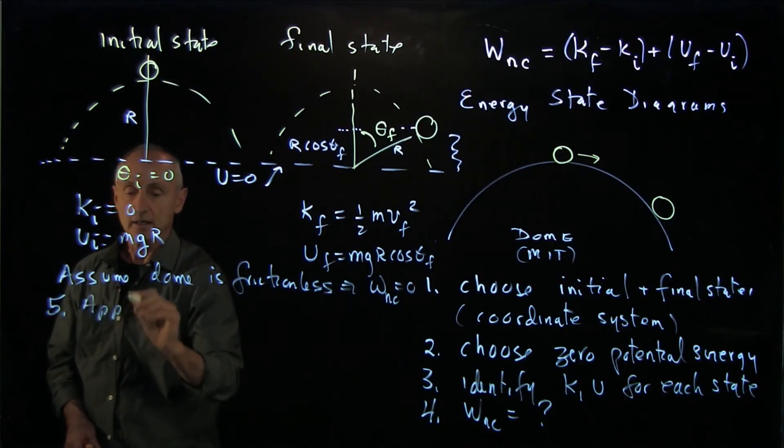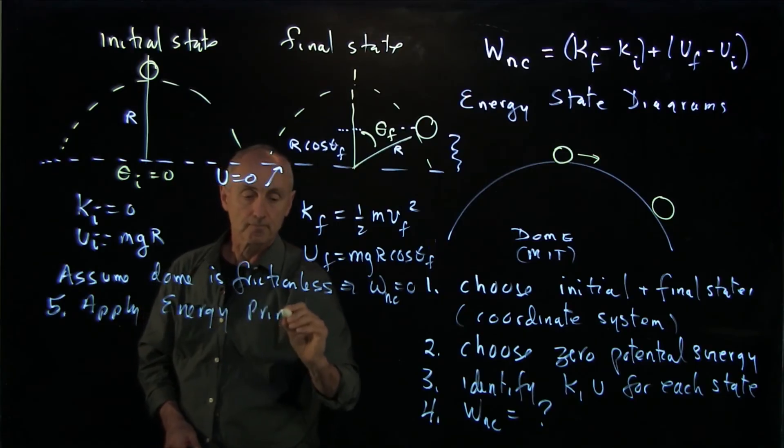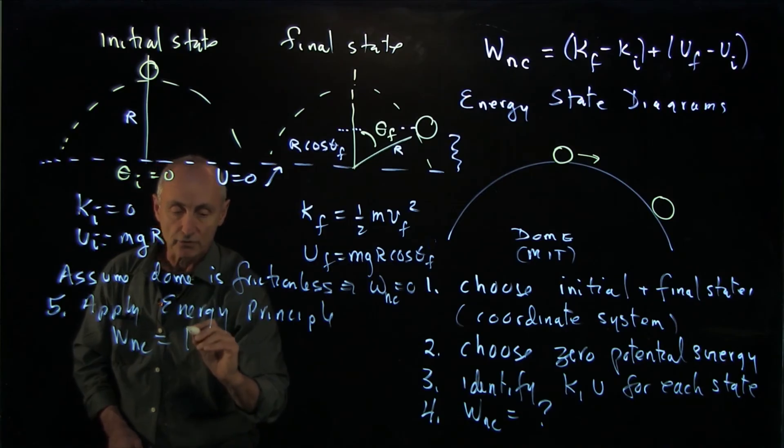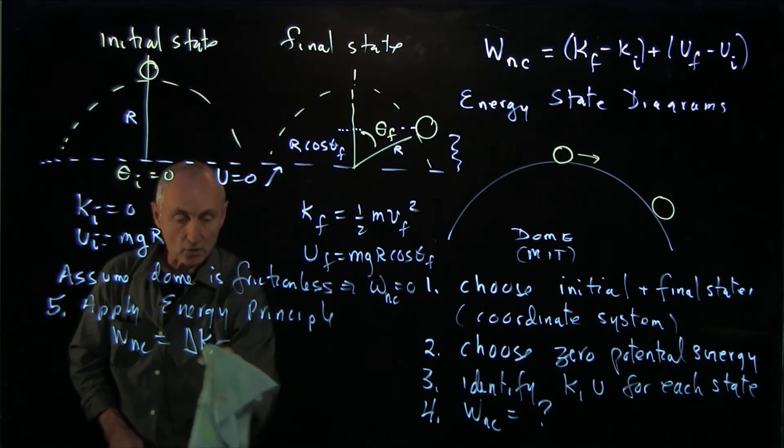And our last step, five, is we can apply the energy principle, which is W non-conservative equals delta K. Let's write it out.